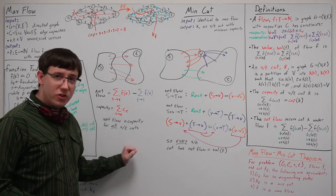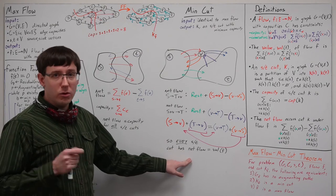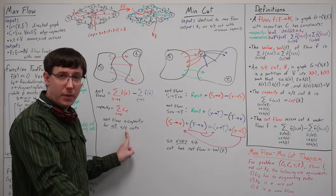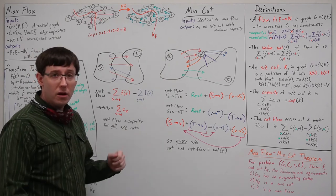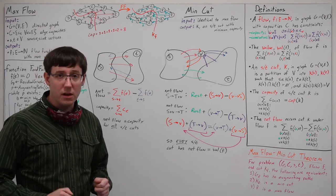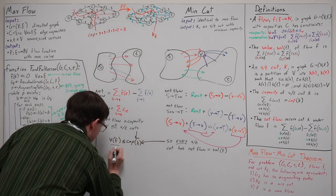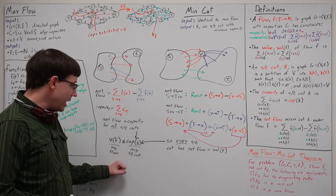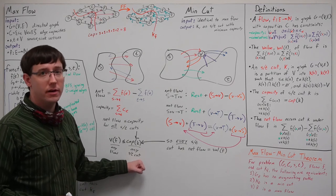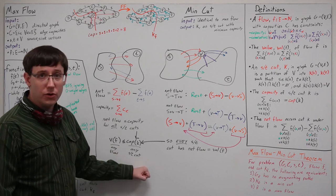Combining these two facts: the net flow across any cut equals the value of the flow, and every cut has net flow less than or equal to its capacity. Therefore, the value of the flow must be less than or equal to the capacity of any cut in the graph. And if any flow has value less than or equal to any cut, that must mean the max flow is less than or equal to the min cut.